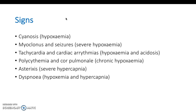On examination, key signs include polycythemia and cor pulmonale, which are signs of chronic hypoxemia — the body compensating for low oxygen. If the lungs aren't well ventilated, the patient can develop pulmonary hypertension, leading to fluid overload in the right ventricle and cor pulmonale. Another compensatory mechanism is producing more red blood cells, leading to polycythemia. Tachycardia is a more acute sign of low oxygen in the blood.